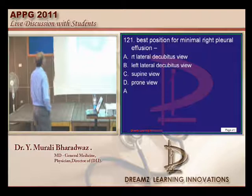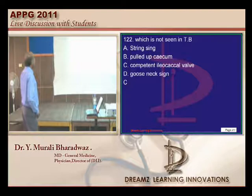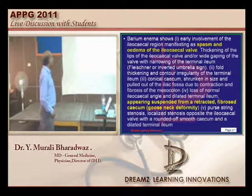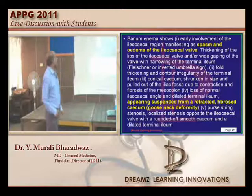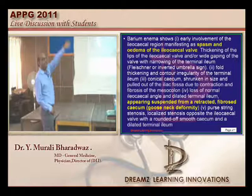In tuberculosis, we find the goose neck sign, pulled-up caecum, and string sign. The ileocecal valve typically becomes edematous and incompetent. It looks as if an inverted goose is being held — that is the typical appearance.